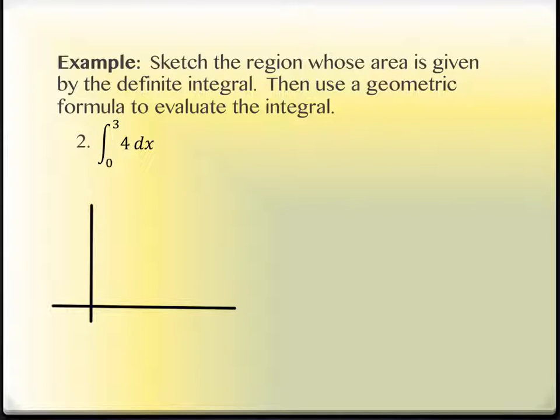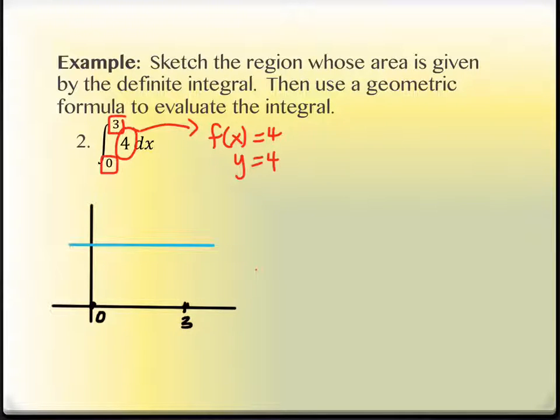What is the graph of this going to look like? A horizontal line at y equals four. I've got some limits of integration that I can work with, zero and three. So this tells me where I start and stop on the x-axis. I'm going to start here at zero and stop at three. I'm supposed to be shading from y equals four down to the x-axis.